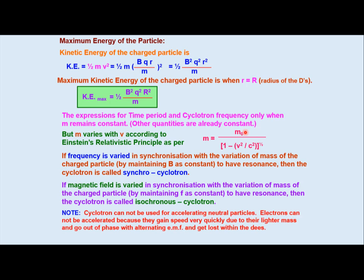Cyclotron cannot be used for accelerating neutral particles. Electrons can not be accelerated because they gain speed very quickly due to their lighter mass and go out of phase with alternating EMF and get lost within the D's.